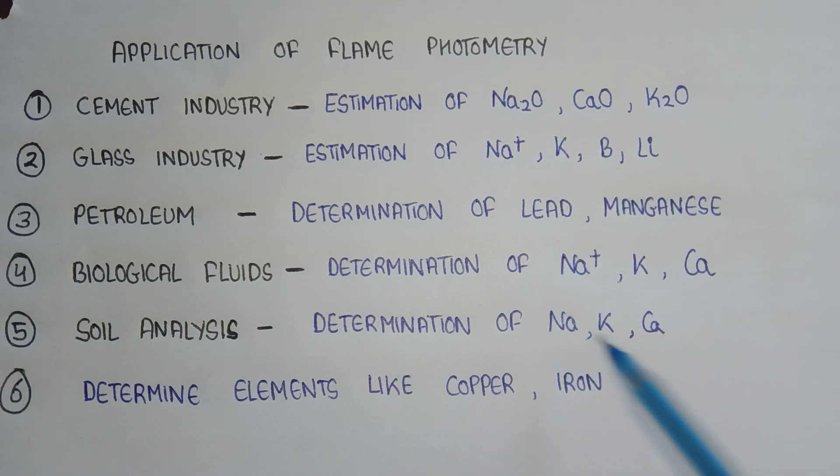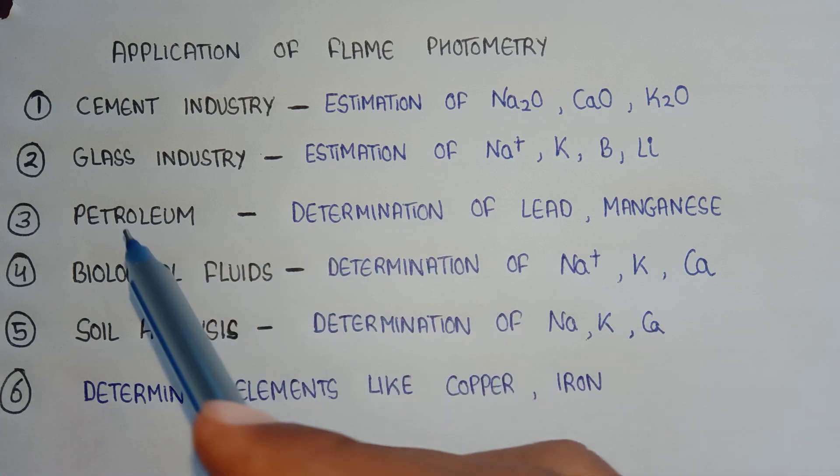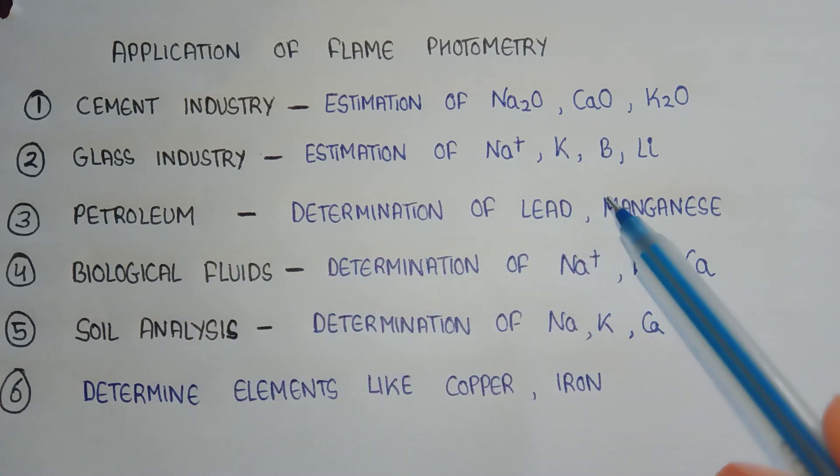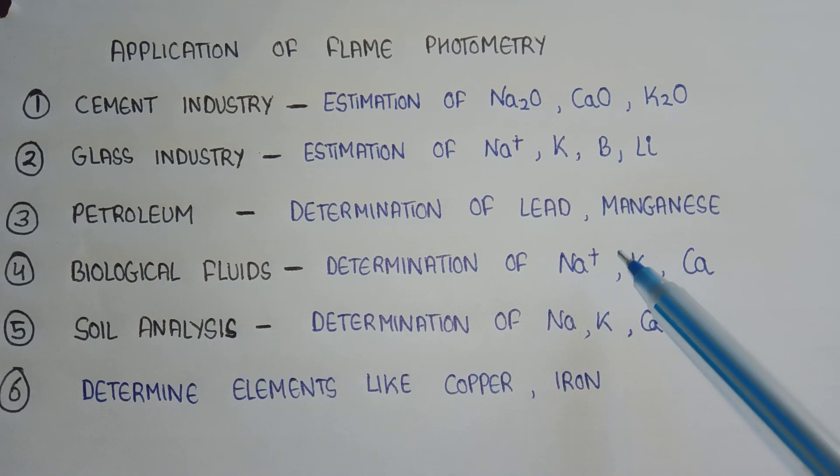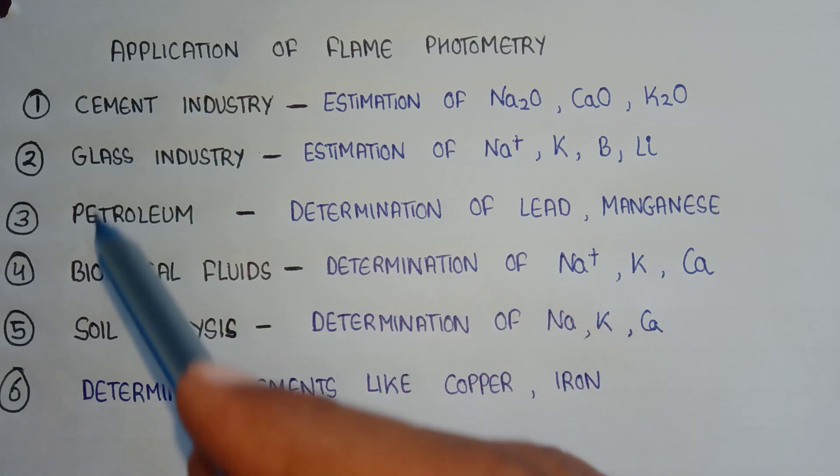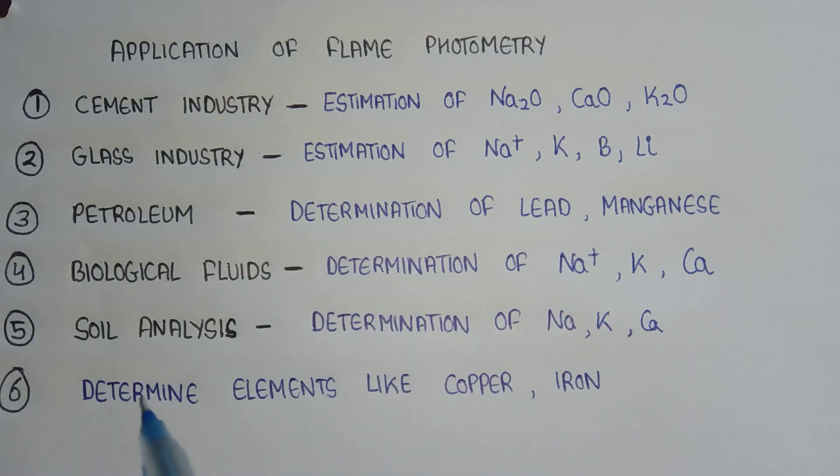Now one thing you can see is that sodium, potassium, and calcium are coming many times in all of these. If we leave only petroleum, which has lead and manganese, all four others have sodium, potassium, and calcium. So it is very easy to remember this. All you need to remember is these industries. Sixth and last, it determines elements like copper and iron.